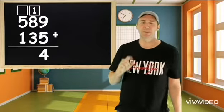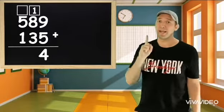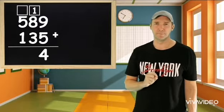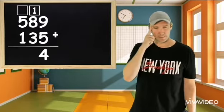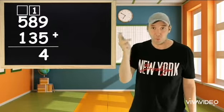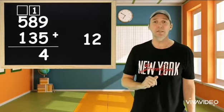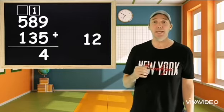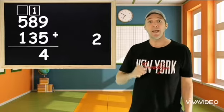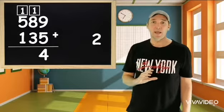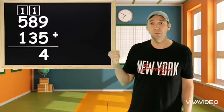And now we do the tenth place. We have eight plus three plus one. Let's try it. Eight, nine, ten, eleven, twelve. The answer is twelve. Very good. So I take the one and I put it in the hundreds place. And the two I put in the tenth place.